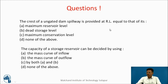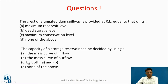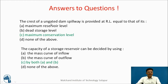Two questions: First, the crest of an ungated dam spillway is provided at RL equal to — maximum reservoir level, dead storage level, maximum conservation level, or none of the above? Second, the capacity of a storage reservoir can be decided by using — the mass curve of inflow, the mass curve of outflow, both A and B, or none of the above? Answers: The crest of an ungated dam spillway is at the maximum conservation level, as seen in the figures. The capacity of a storage reservoir can be decided using both the mass curve of inflow and the mass curve of outflow.